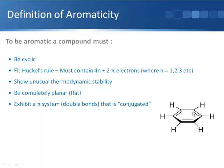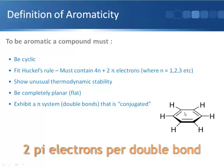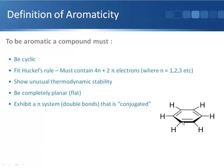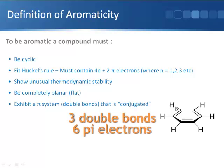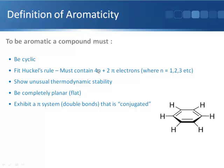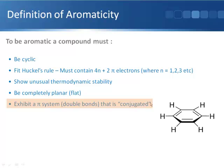The molecule has to be cyclic, and it has to have a number of pi electrons that fit Hückel's rule. Each double bond contributes two pi electrons, so for benzene with three double bonds there are six pi electrons. Six fits Hückel's rule because six equals 4n+2 with n equal to one. The molecule must also show unusual thermodynamic stability, be completely planar, and have a fully conjugated pi system. These are the rules you apply to a molecule to determine whether it is aromatic.